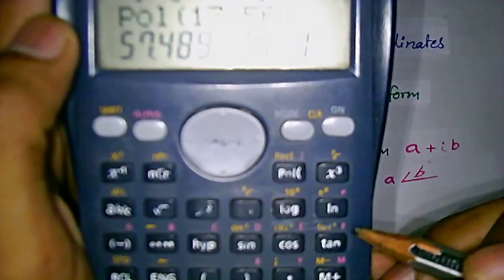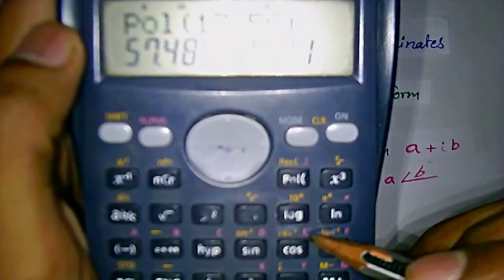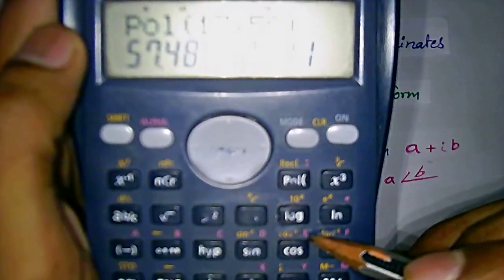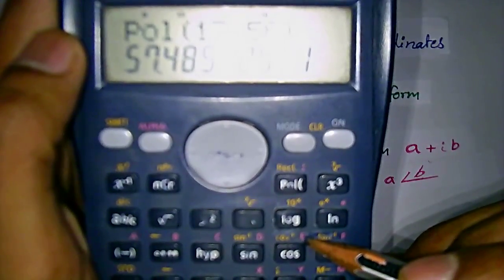We have E here, F here. E will store the modulus value of the rectangular form while we are converting to polar form.